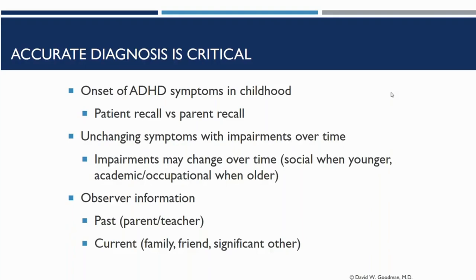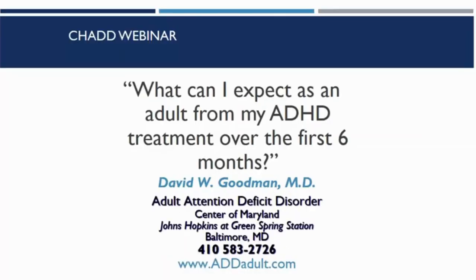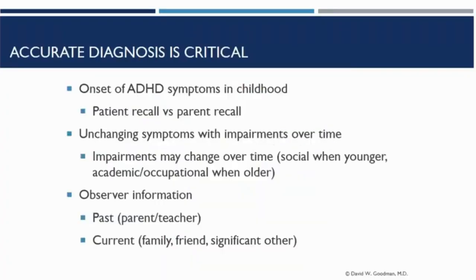The first order of business is to make sure you have an accurate diagnosis. Everything I talk about in regards to the progression of treatment is based on the fact that you have an accurate diagnosis. An accurate diagnosis is based on the history — longitudinal history. If you have ADHD in adulthood, you have to have had symptoms in childhood.